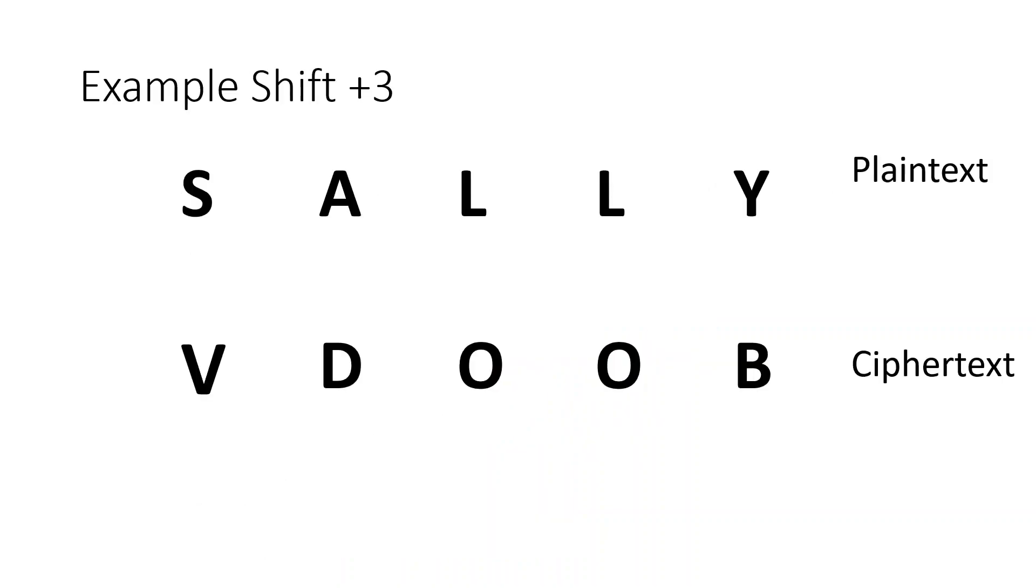This is just an example with a word. The name Sally, if run through the Caesar cipher with a shift of plus 3, is encrypted into V, O, O, B. And as you can see on that last letter of Sally,